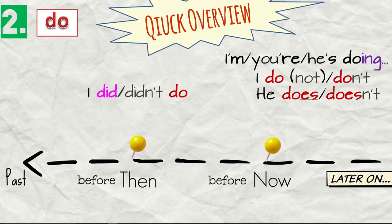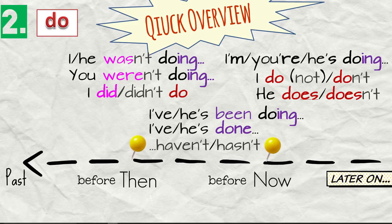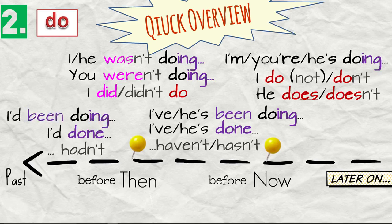I did or didn't do. I was doing or you were doing or the negative, I wasn't, you weren't doing. I've done, he's done. I've been doing, he's been doing. I'd done or I hadn't done. I'd been doing.